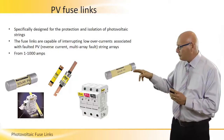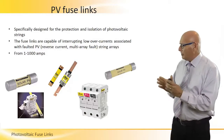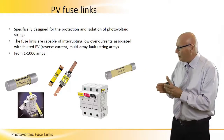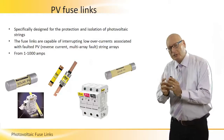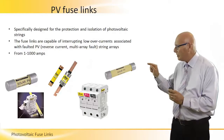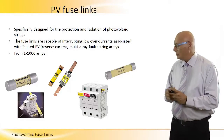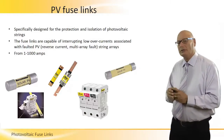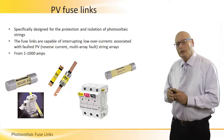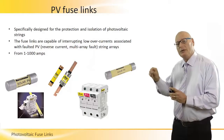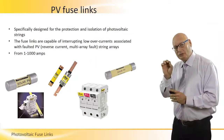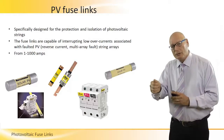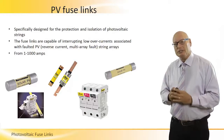In the picture on the bottom right, the device has three separate modules connected together, each of them has a door — yellow, red, black. Behind each door there is a fuse link. Open the door, take out the fuse link, replace it with a new one and close the door. That's how easy it is.